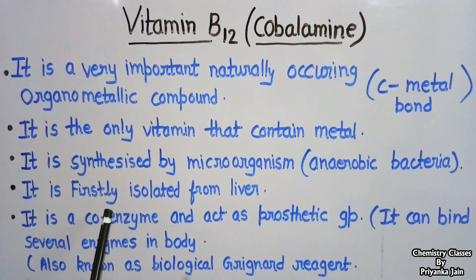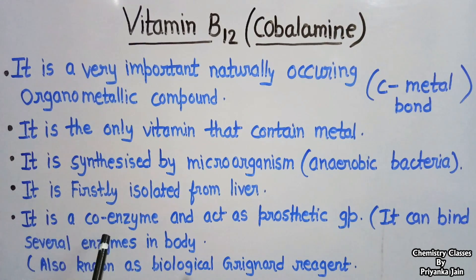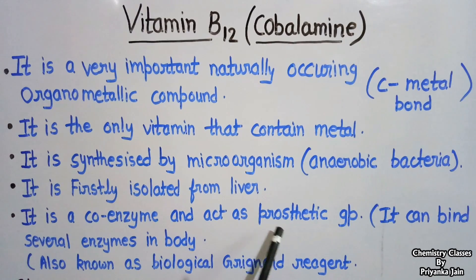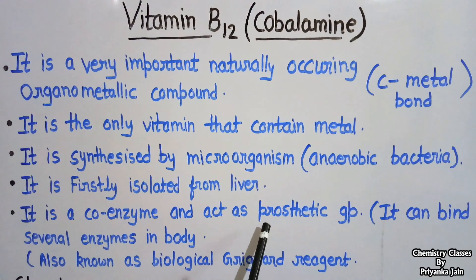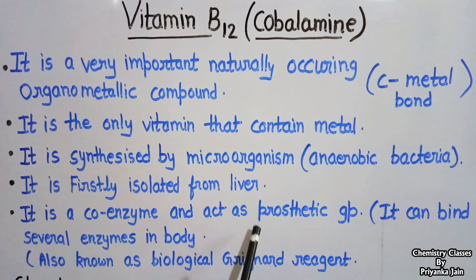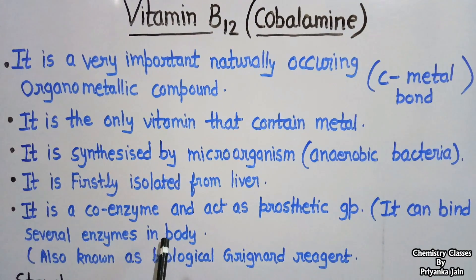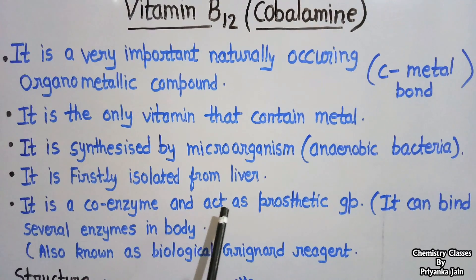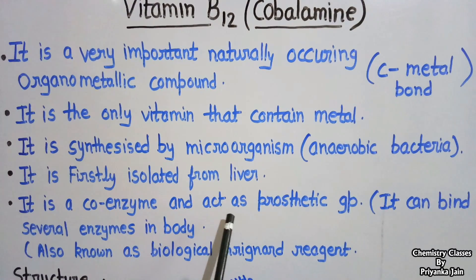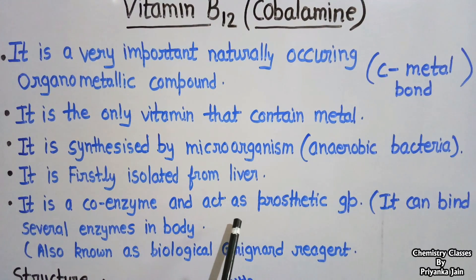It is a co-enzyme and acts as a prosthetic group. What is a prosthetic group? Any group that can bind several enzymes in the body acts as a prosthetic group, and vitamin B12 is a good example.